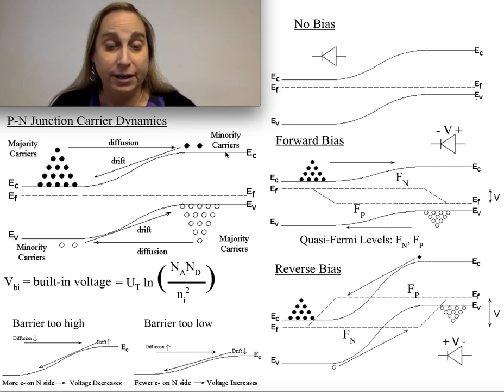In a zero-bias case, there's no voltage across here because there's a single Fermi level. You know this is the P-side because the Fermi level is near the valence band, and so that means you're going to have far more holes than electrons.